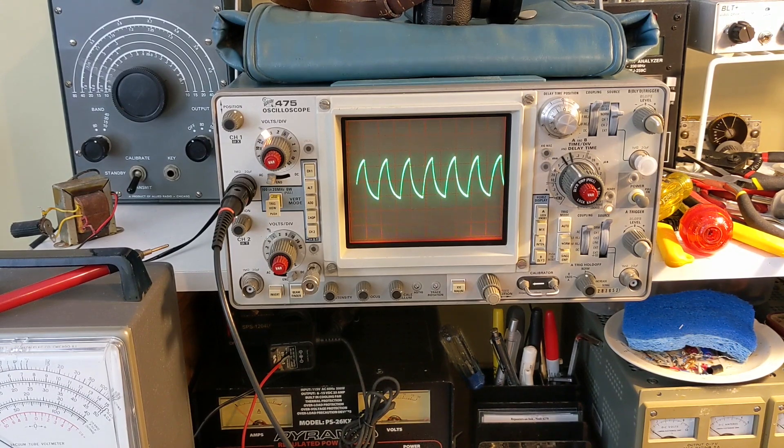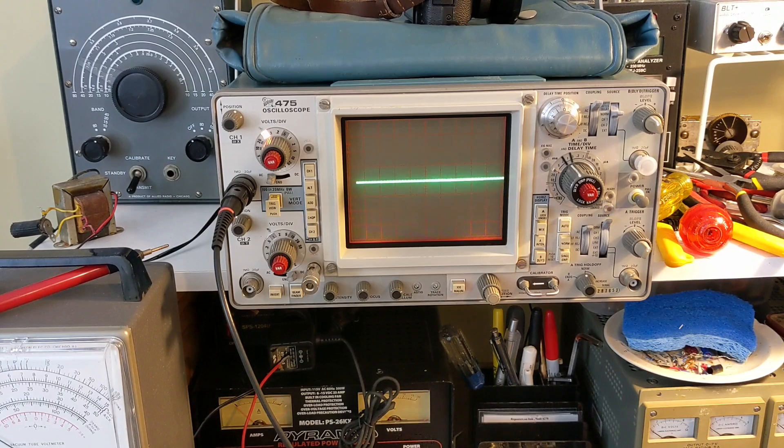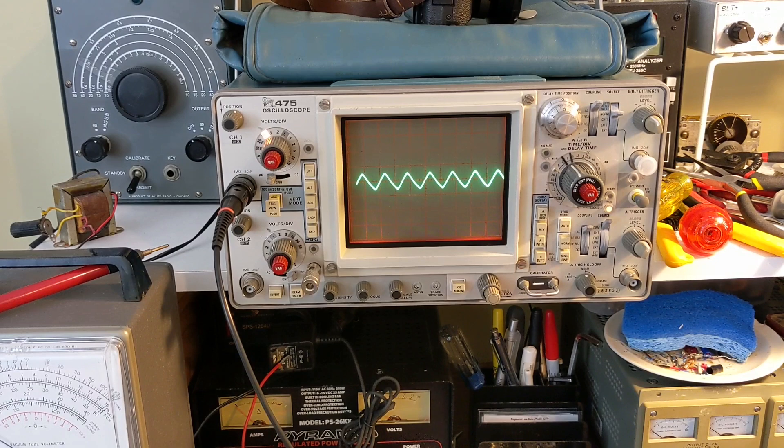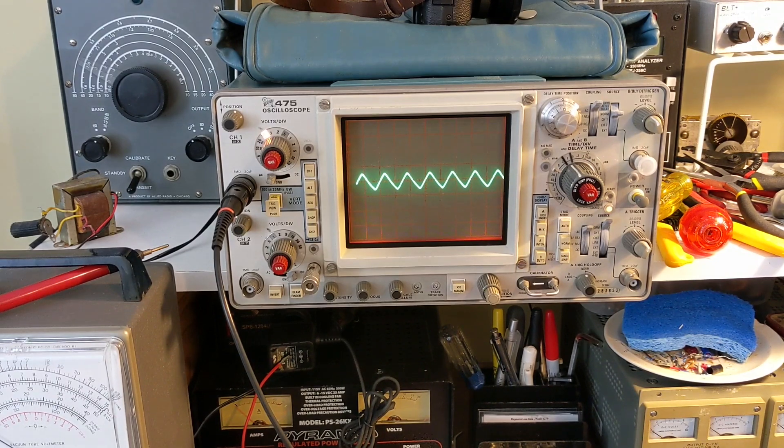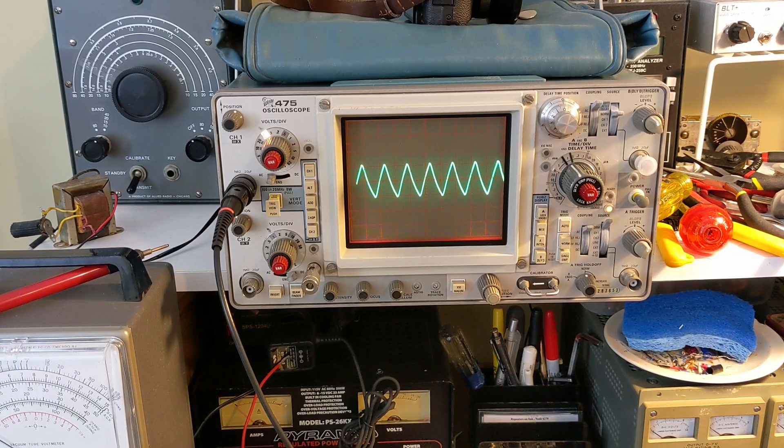We go to the second part of the RC circuit. So, this is resistor and capacitor number two. Now, we're getting more of a sawtooth wave.